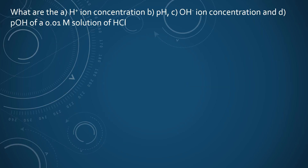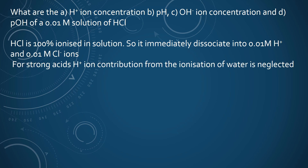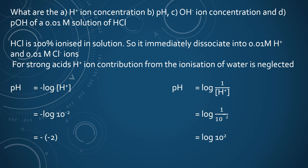Based on the earlier equation, we can calculate the pH and pOH of a 0.01 molar solution of hydrochloric acid. Hydrochloric acid is a strong inorganic acid — it is 100% ionizable, so it immediately dissociates into 0.01 molar hydrogen ions and 0.01 molar chloride ions. Because it is a strong acid, we will neglect the hydrogen ion contributed by the ionization of water. So pH equals the negative logarithm of 10 to the power minus 2, which gives a pH of 2.